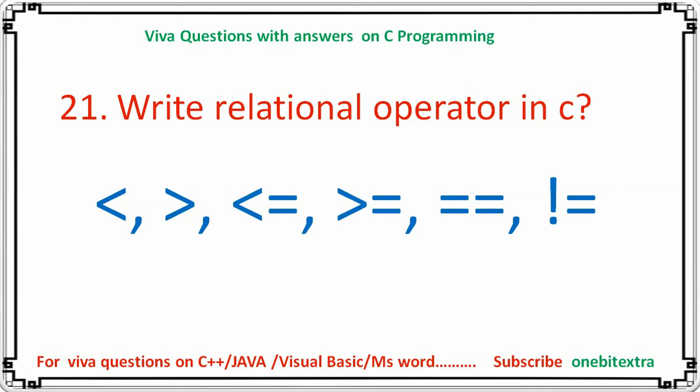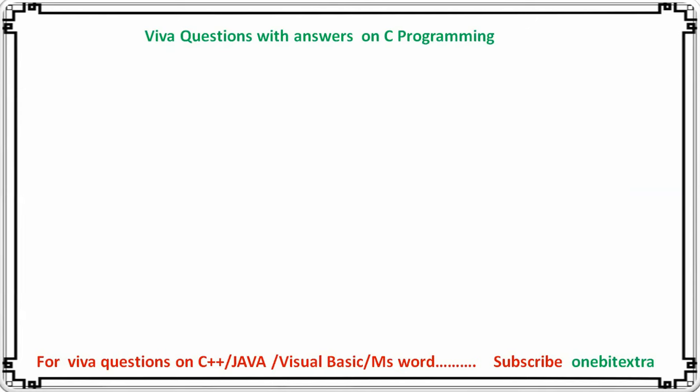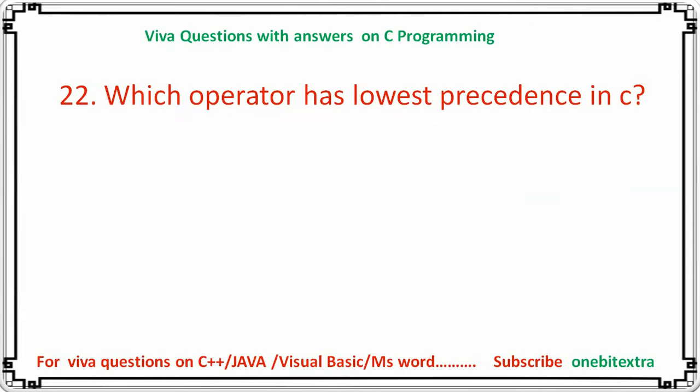Next question: which operator has the lowest precedence in C? The answer is the comma operator — it has the lowest precedence in C.